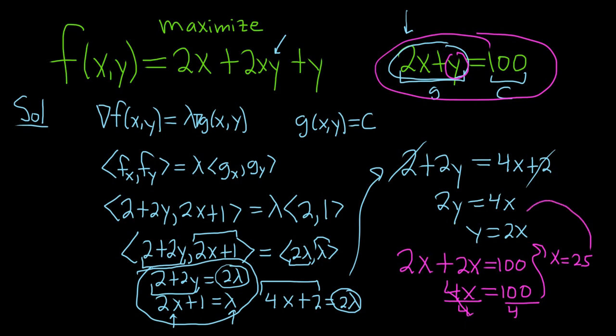Once we have x, we can plug it back in here, so we get y equals 2 times 25. So y equals 50, it's really good stuff. So you have x, we have y, now all we have to do is plug it back into here, and that will give us our maximum.